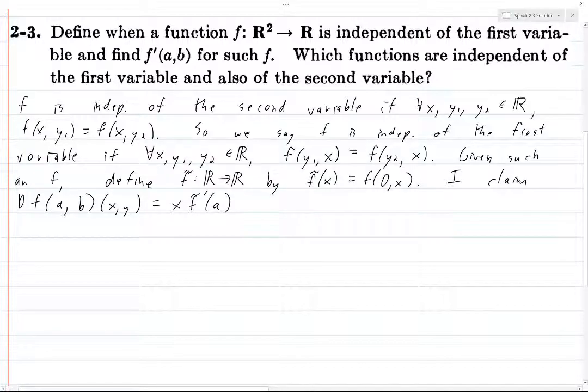No, wait. The other thing when I wrote out this solution is I completely flipped the two, so I proved everything for functions which are independent of the second variable. So this should be, so independent of the first variable means only the second matters. So only the second is where we extract the second derivative.